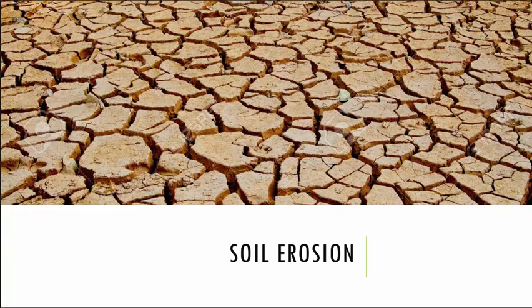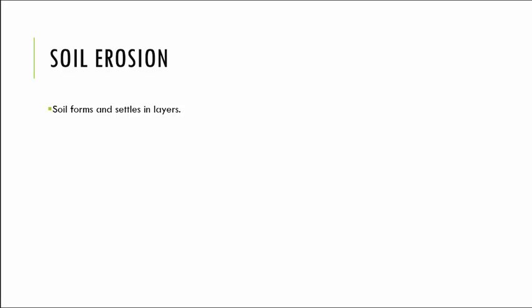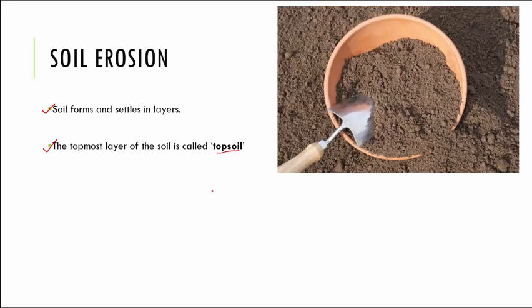Now let us look at soil erosion in more detail. The soil on earth is formed when it settles in layers. In these layers, the topmost layer is called the topsoil. If you dig the soil a little, it's very dark and humid — that is the topsoil. This topsoil gets mixed with humus and is the fertile part of the soil. Humus is organic matter like dead and decaying plants and natural waste materials.